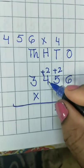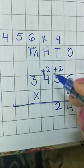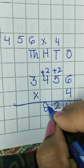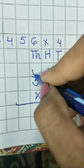4 times 4 are 16. 16 plus 2, 18. So we will write 8 here and 1 will carry.